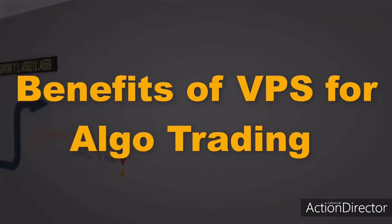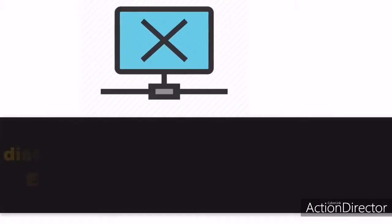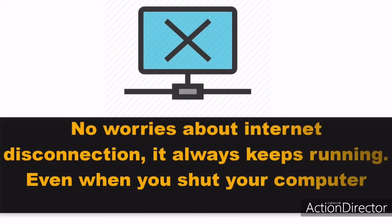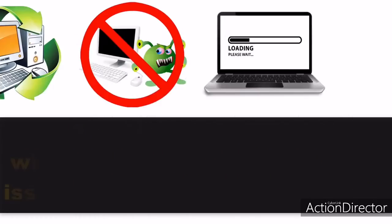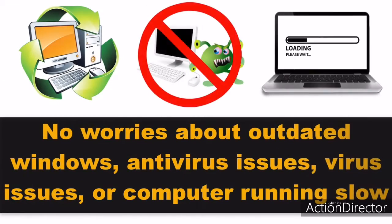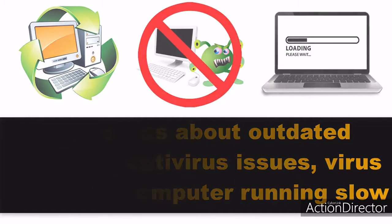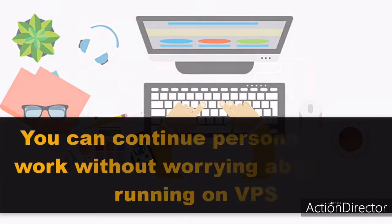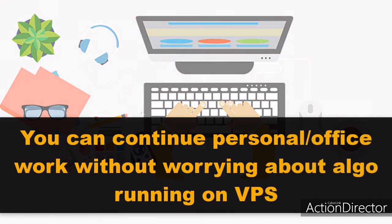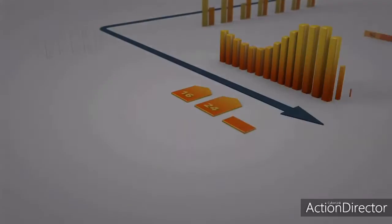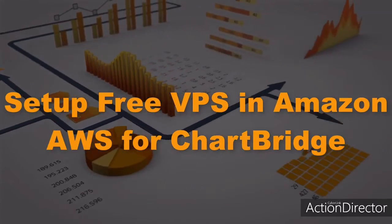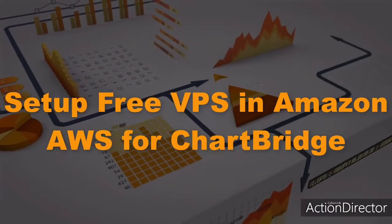The benefits of running ChartBridge on a VPS are basically uninterrupted trading — no worries about internet connection, it always keeps running even when you shut your computer, no worries about outdated Windows, antivirus issues, or computer running slow. You can continue personal or office work without worrying about algo running on the VPS.